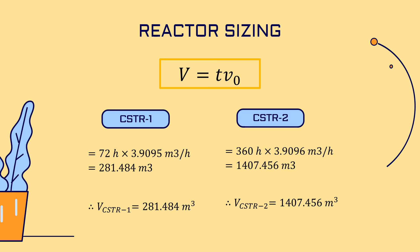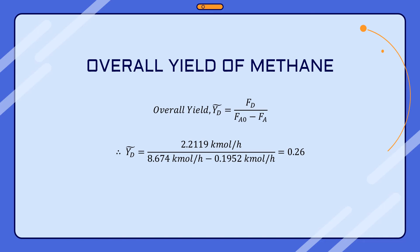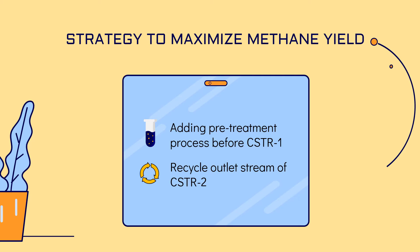The calculated volume for CSTR1 is 281.484 m³ and the volume for CSTR2 is 1407.456 m³. The overall yield of methane calculated is 0.26, meaning 0.26 moles of methane is produced per mole of glucose. The strategy to maximize methane yield includes adding a pre-treatment process before CSTR1 and recycling the outlet stream from CSTR2 that contains acetic acid, which is a reactant for methane production.